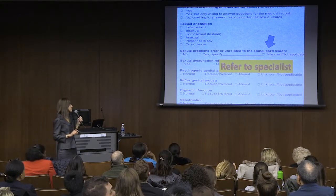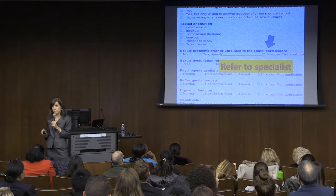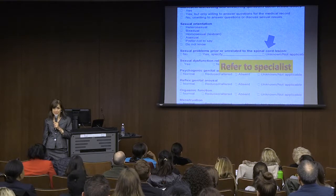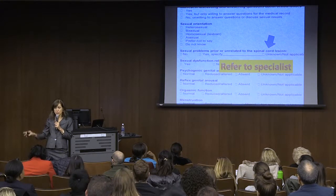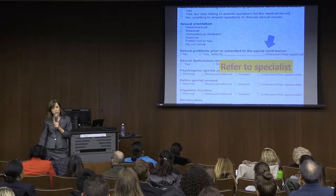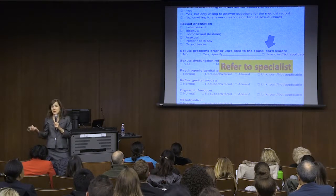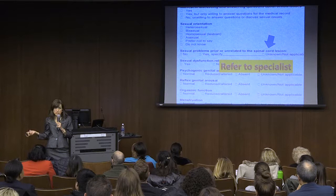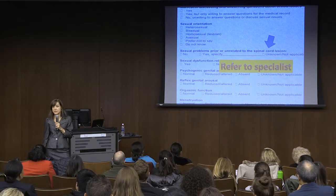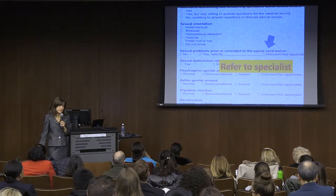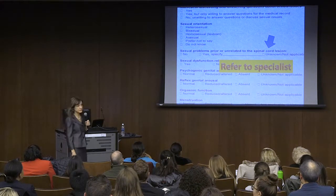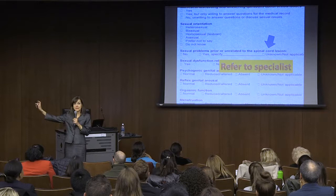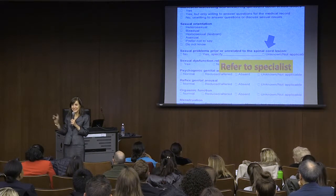Then we address sexual problems before the spinal cord lesion. This is an important question because there are so many reasons you can have sexual problems: diabetes, high blood pressure, medications, or maybe you just never had good sexual function, maybe you had a problem your whole life, maybe you were going through a divorce. If they had problems before, you specify it—and remember, that's your red flag indicating an outside therapist is needed; you're not going to be able to handle this yourself.